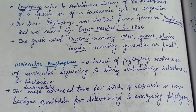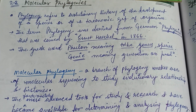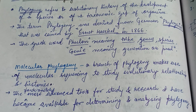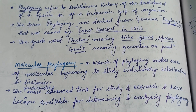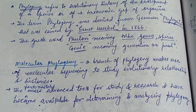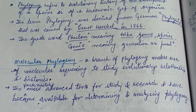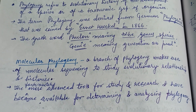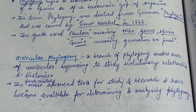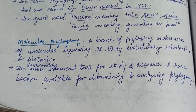Phylogeny refers to the evolutionary history of the development of a species or of a taxonomic group of organisms. It was first coined by Ernst Haeckel in 1866, and it is a German word. The Greek word phylogeny means tribe, genus, species, and genus generation or production.